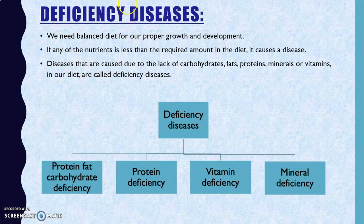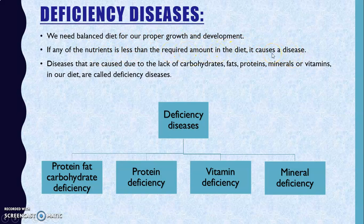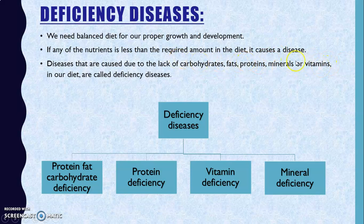Deficiency diseases are caused when nutrients are not taken in the right amounts. We need a balanced diet for proper growth and development. If any nutrient is less than the required amount in the diet, it causes a disease. Diseases caused due to lack of carbohydrates, fats, proteins, vitamins, or minerals are called deficiency diseases.